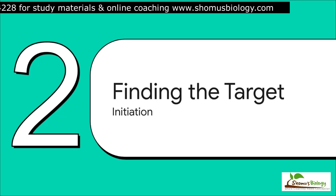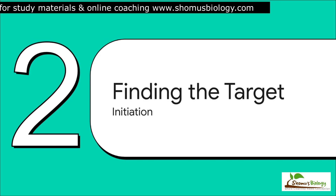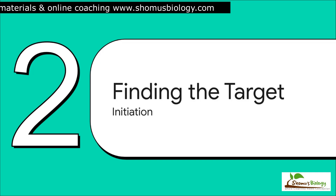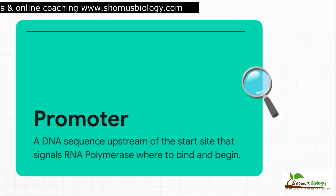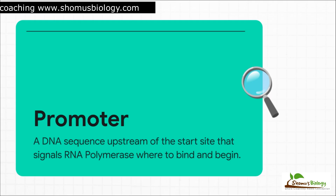Keeping that incredible efficiency in mind, let's zoom in on what is arguably the most critical part of this whole mission: initiation. This is the main control point — this is where the cell makes the big decision: do we commit resources and go, or do we stand down? Everything hinges on getting this phase right. So what's the signal to start? It's something called the promoter. The best way to think about it is like a set of GPS coordinates on the DNA molecule. It's a very specific sequence, located upstream of the gene — just before it. It's basically a big flashing sign that tells RNA polymerase: land here, the mission starts right here.